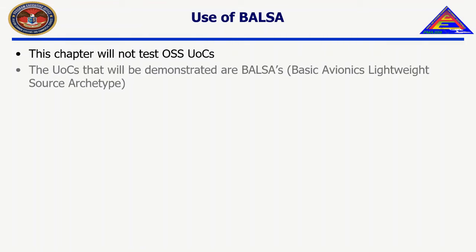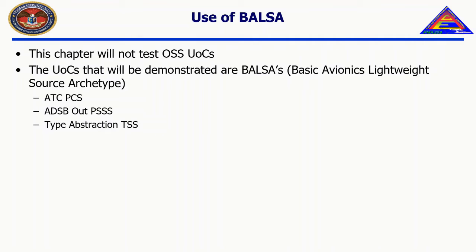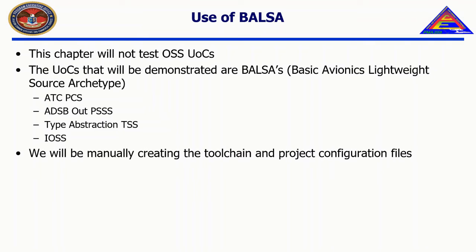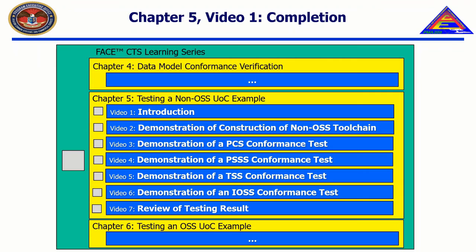The UOCs we will be testing in this chapter are the UOCs contained in Balsa. Although Balsa comes with Project and Toolchain Configuration Files pre-configured, so all you have to do is import them, we will be manually selecting each option in this video series. This is in an attempt to demonstrate creating a toolchain and project configuration from scratch and the general workflow that results from that process.